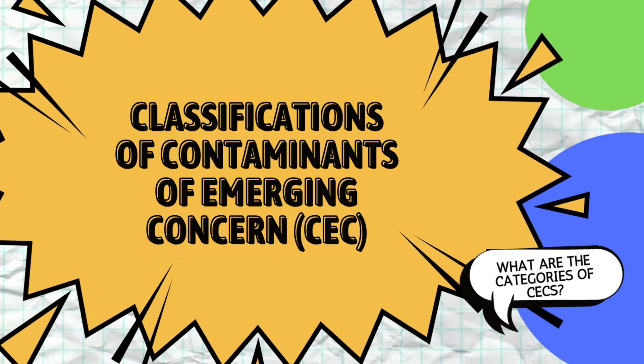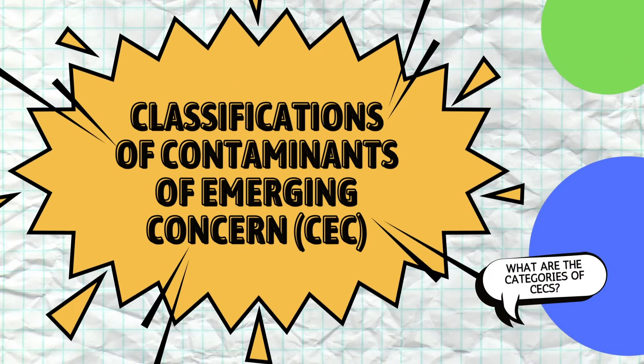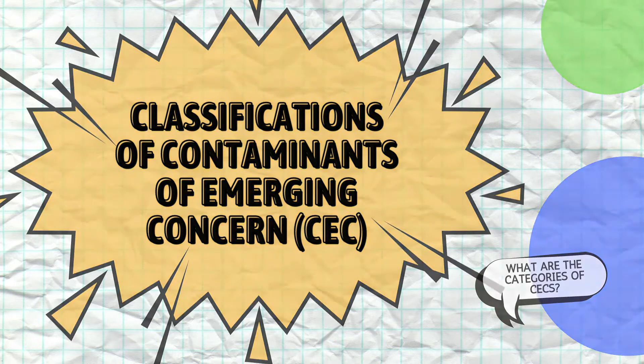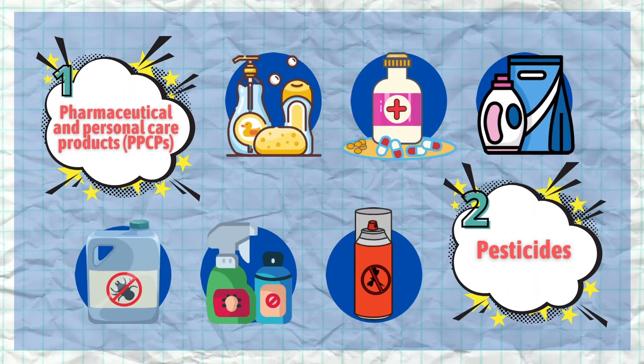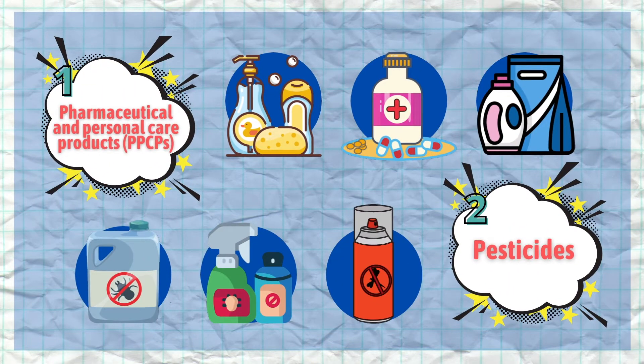Now, let's explore more on the classification of CEC. CEC is normally classified into seven common categories. The most common one is pharmaceutical and personal care products, which mostly consist of products used on a daily basis such as detergents and toiletries.